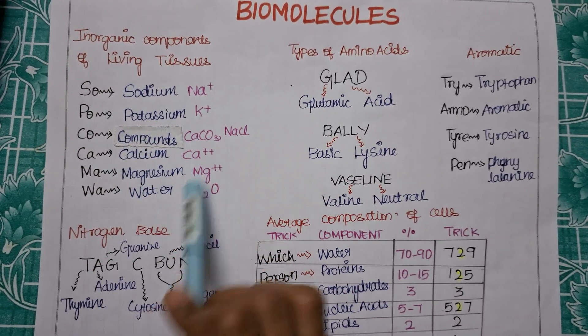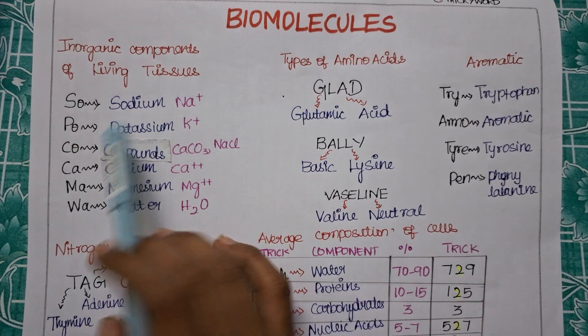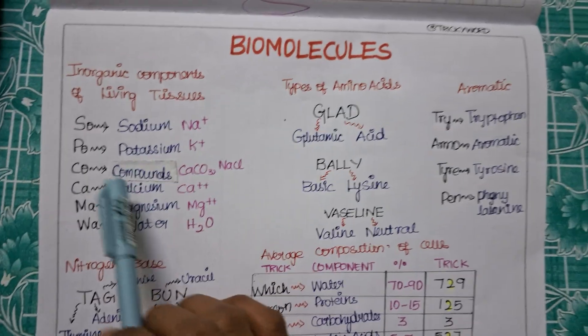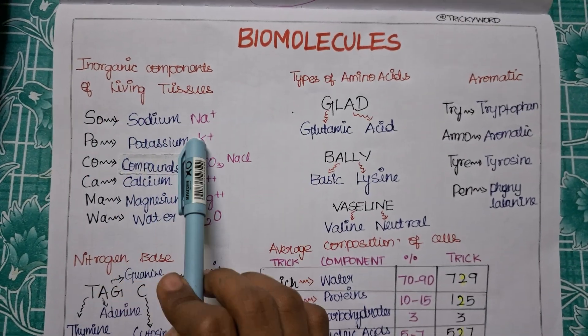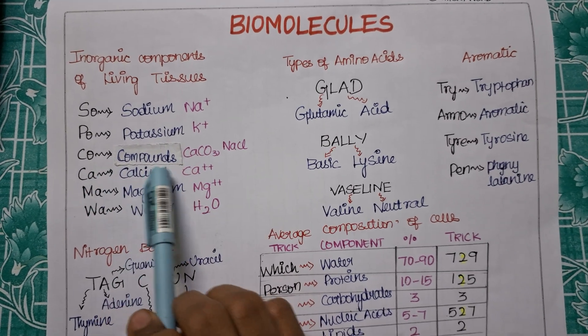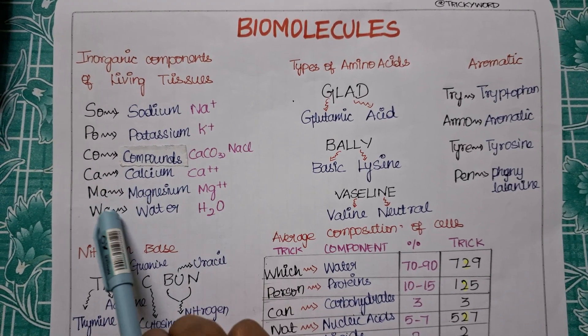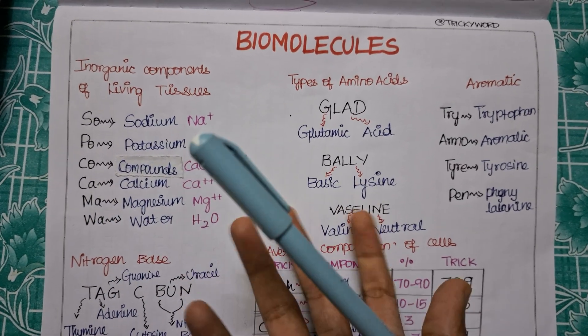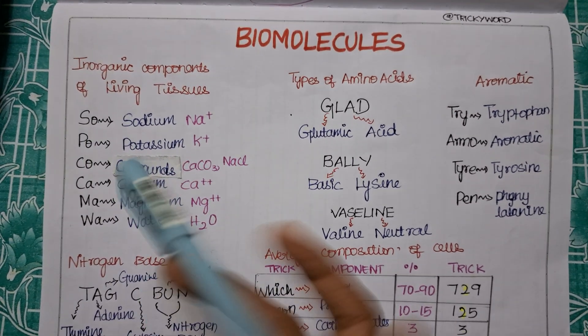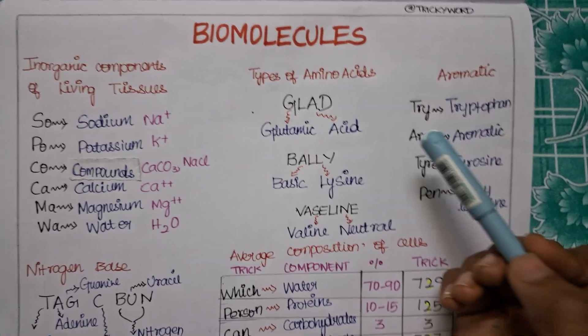SOPOCOCOMAVA - because I have taken this trick from the first two digits of all the components, that's why it has been, but it is easy if you memorize it. So SO for sodium, PO for potassium, CO for components, CA for your calcium, MA for your magnesium, VA is for water. Simple, right? So these are the inorganic components of your living tissue.